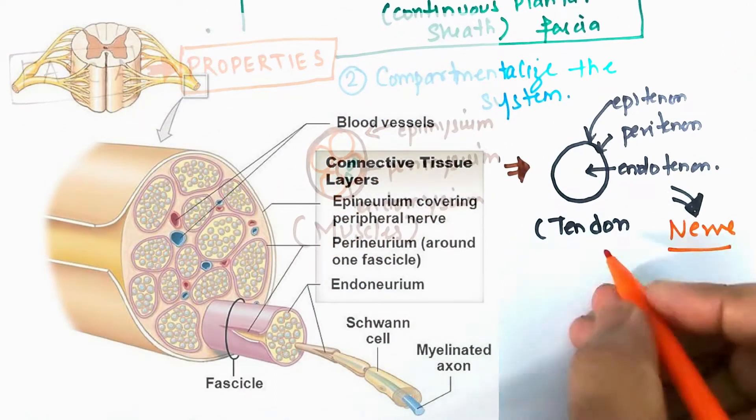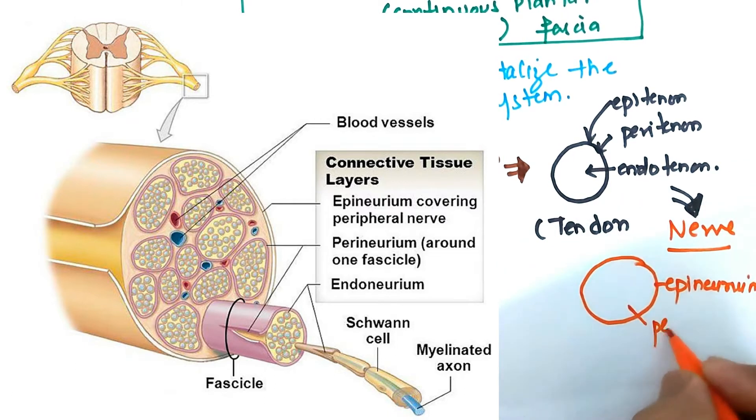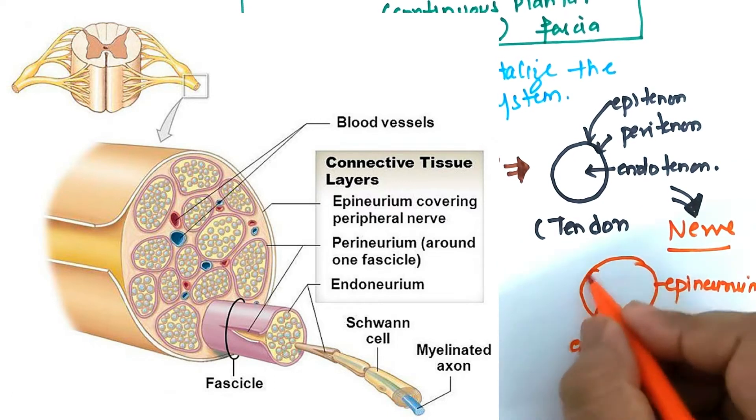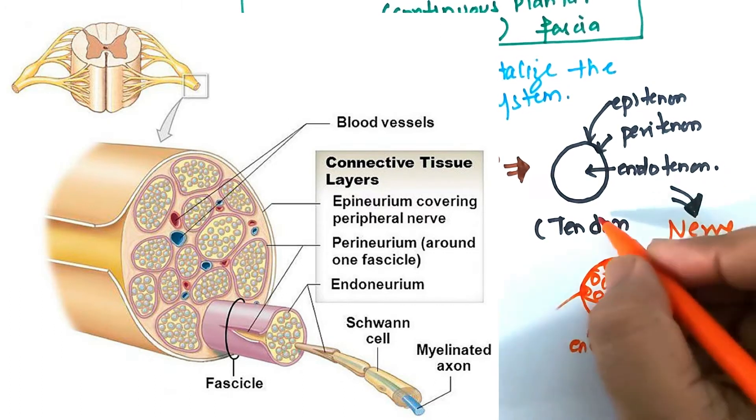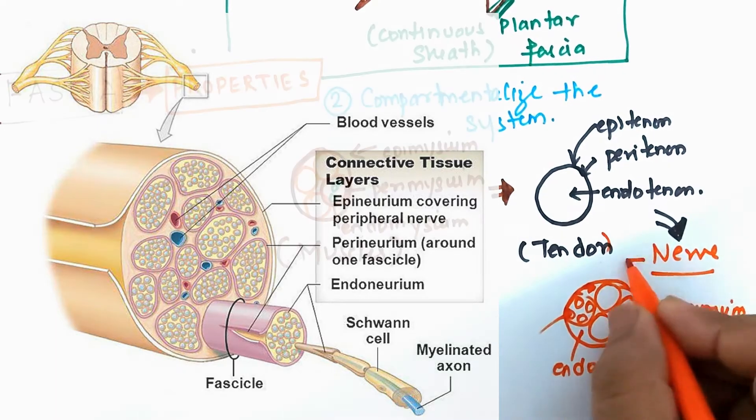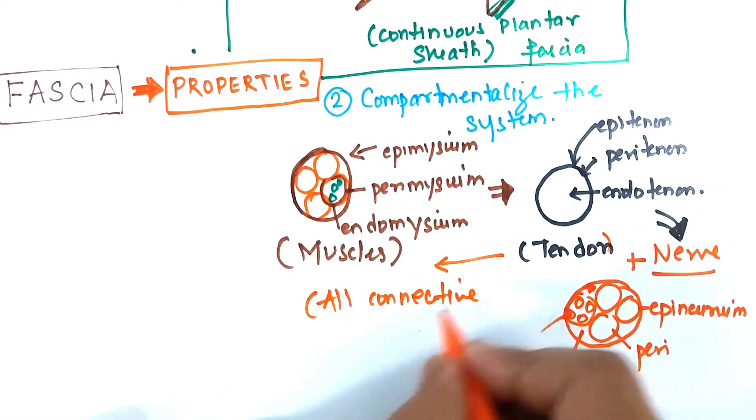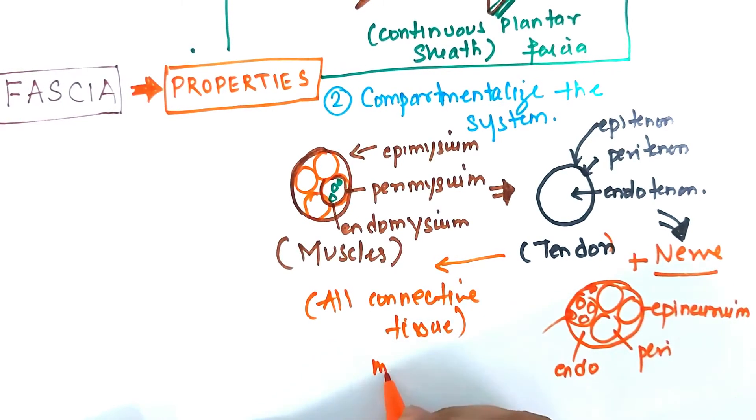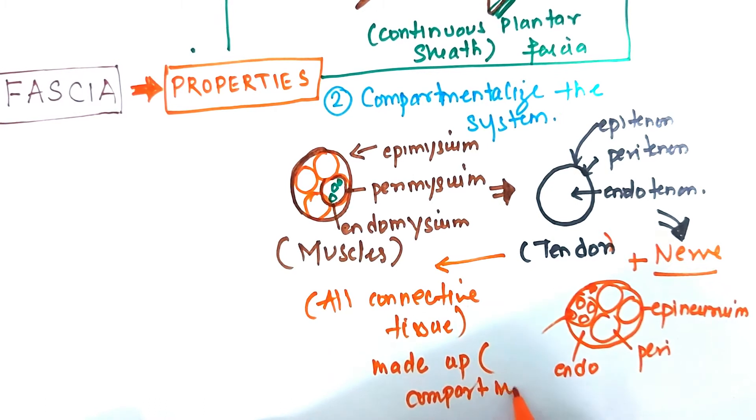Like for example, a peripheral nerve has the outer covering surrounding it called as the epineurium. And the structural and functional unit of the nerve, that is the neuron, also has a fascial sheet surrounding them called as the endoneurium. So basically, all connective tissue either is connected by fascia or has fascia within them.